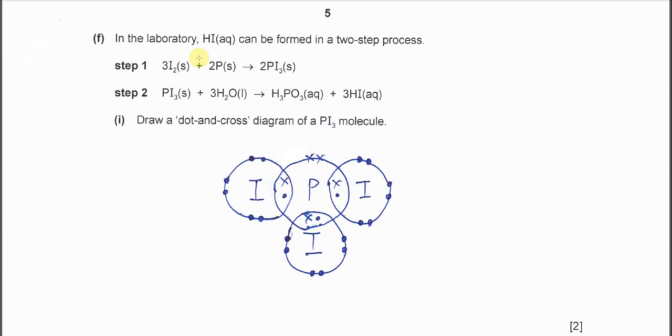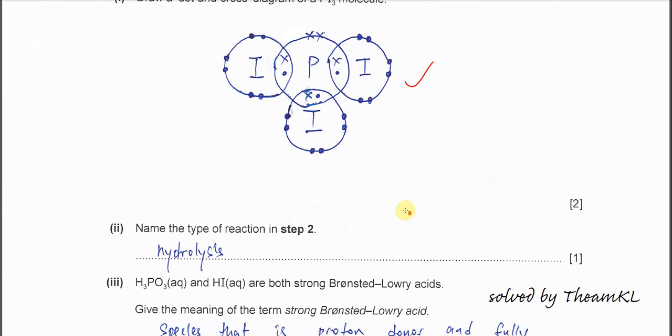Part F. In the laboratory, HI can be formed in two processes. Part 1: Draw a dot-cross diagram for PI3. You must show all the valence electrons. Phosphorus must have five, iodine must have seven. They share one electron from each atom. Form three bondings here. You must show these three, the pairs of electrons that share and one lone pair on the phosphorus. Must show the remaining electrons on the iodine. Something like this.